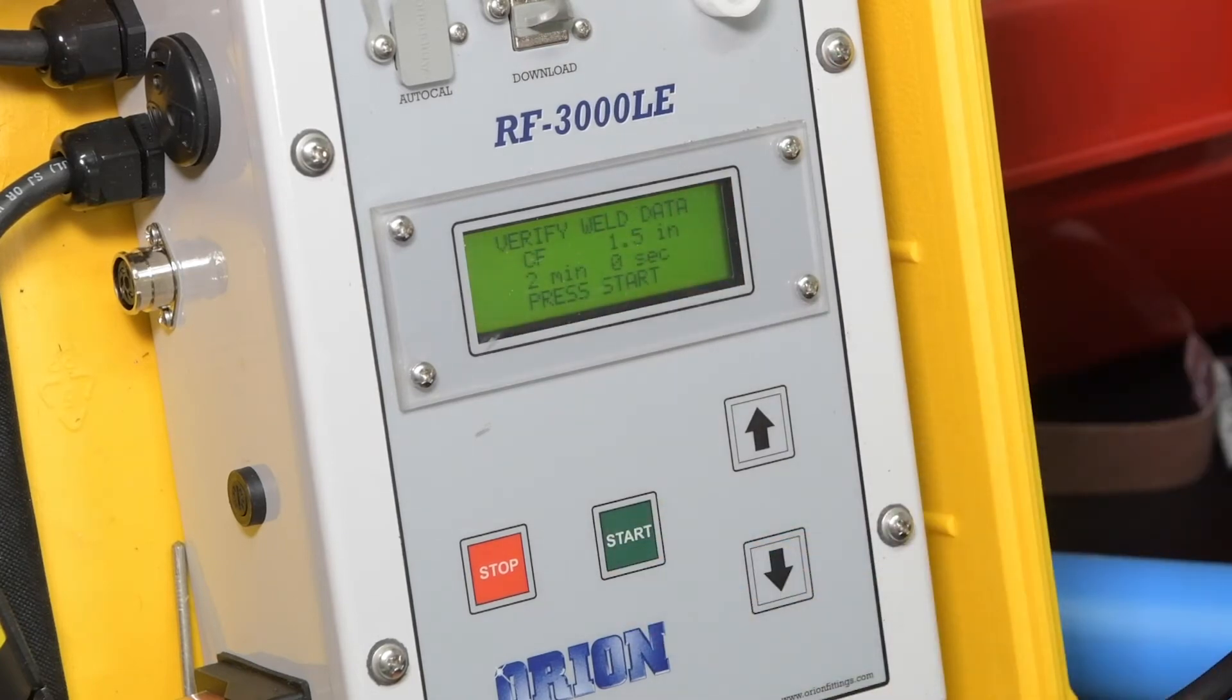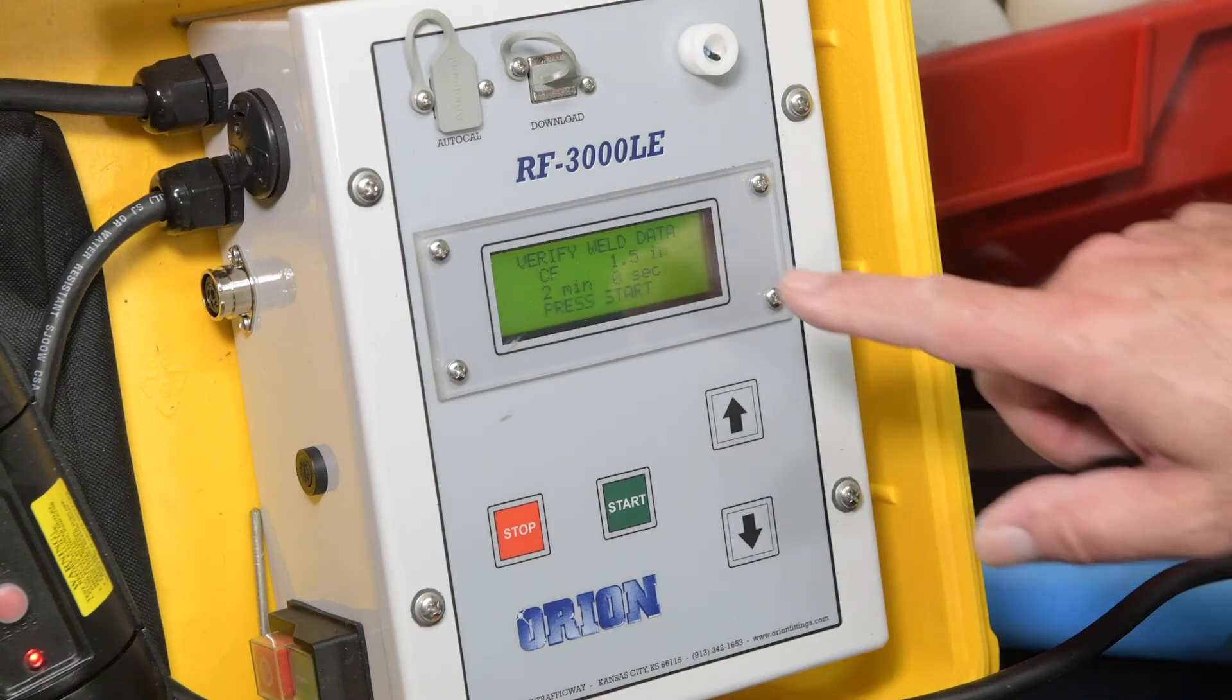The screen will then display verify welding parameters and an audible beep will sound to indicate the fusion unit is ready to begin welding. Verify the data displayed on the screen matches the joint being fused. If the information is incorrect, press the stop/back button to return to any of the previous menu options to correct the fusion parameters.